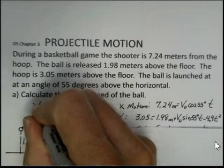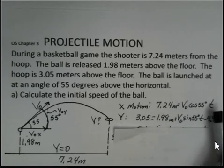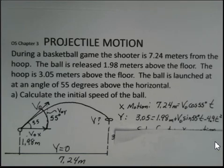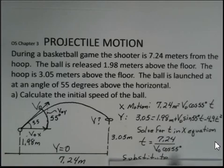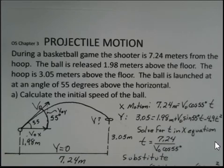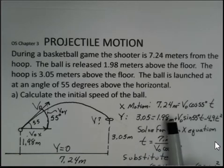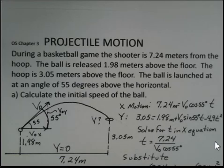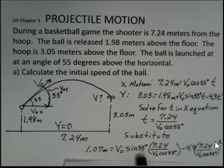We want to find the initial velocity — the speed, actually, since we're already given the angle. The method will be to solve for t in one of these equations and substitute it into the other. Taking the x motion equation and solving for t, we find t equals 7.24 divided by V0 cosine 55. Now substituting that in: 3.05 minus 1.98 gives us 1.07, and we still have V0 sine 55.